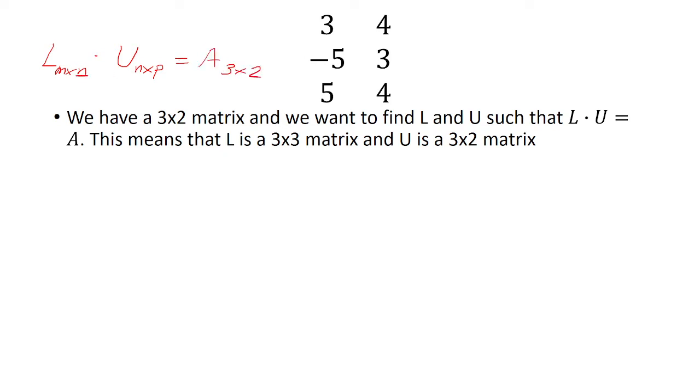Whenever you're multiplying matrices, these two numbers have to be the same, and the outer numbers are what go over here. So M has to be 3, and P has to be 2. L is going to be a square matrix, so because M is 3, N also has to be 3. And so now we've figured out the dimensions: L is 3 by 3, U is 3 by 2.